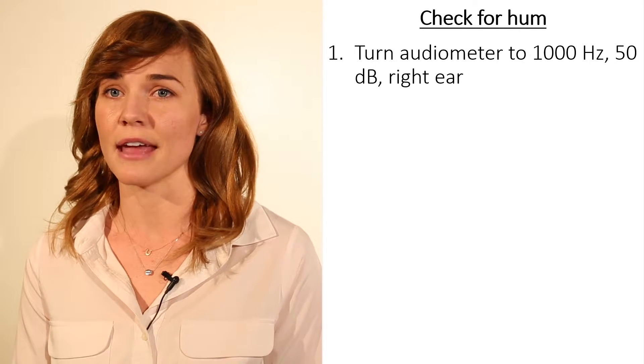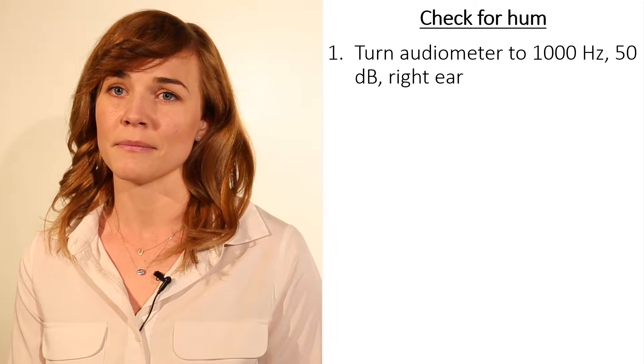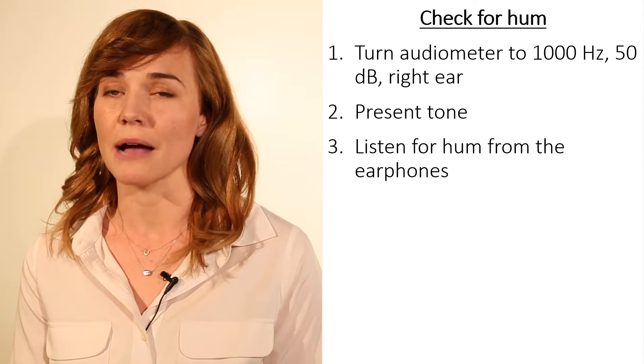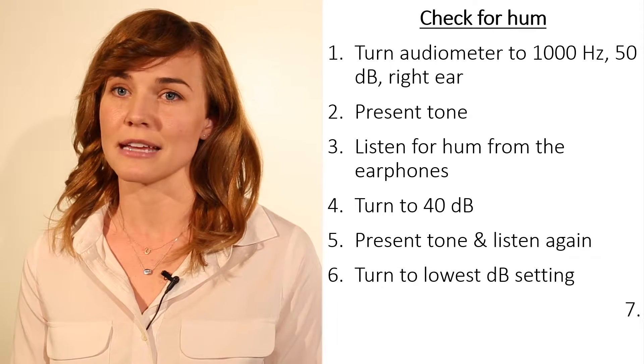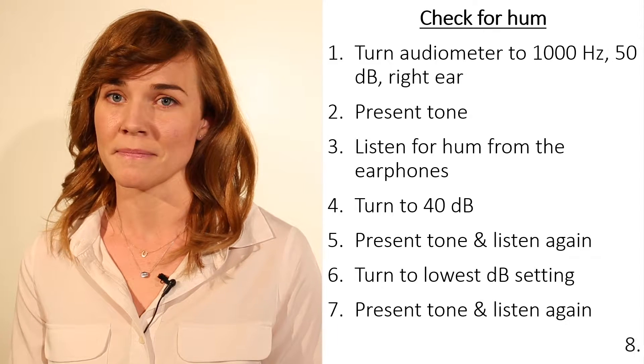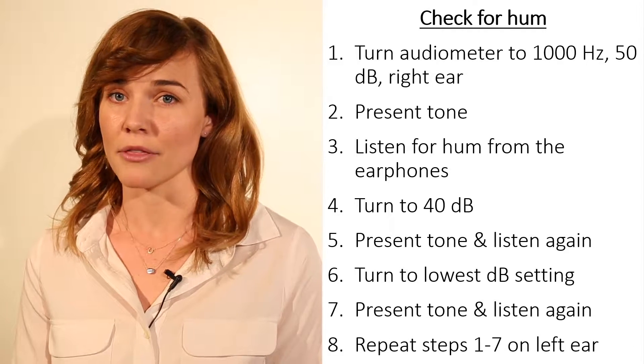Now put the headphones on yourself. Turn the audiometer on to 1000 Hz and 50 dB on the right ear. Present the tone and listen for hum in the earphones. Check again at 40 dB and then at the lowest dB setting on your machine. Now do the same for the left ear. There should be no humming or other noises.